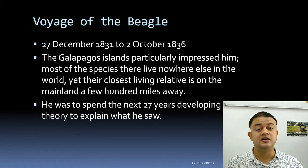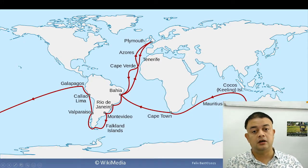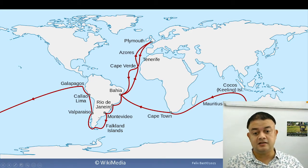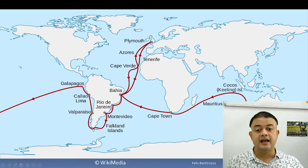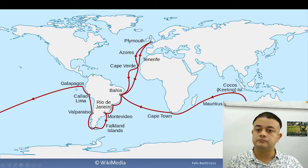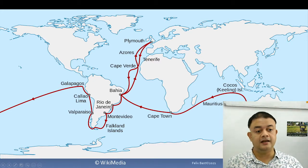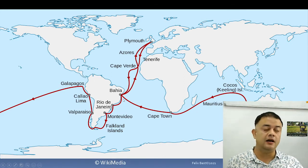He amassed a large number of evidences to substantiate his theory. The route he took went from Plymouth across the Atlantic to Bahia in Brazil, then Rio de Janeiro, Montevideo, Patagonia, Falkland Islands, Chile, Galapagos, and Peru — Callao, Lima being the capital of Peru. He spent a lot of time in Galapagos and then continued westward to Sydney, Hobart, Mauritius, Cape Town, and finally back to Plymouth.